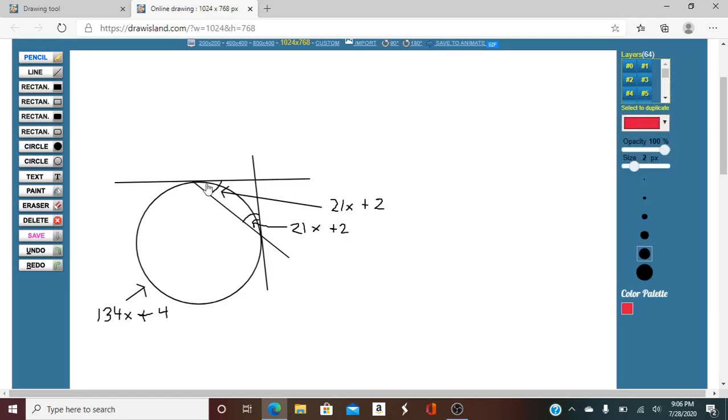This arc length here is going to be 360 degrees minus this. So that's going to be 360 minus 134X plus 4. So working that out, that becomes 356 minus 134X.